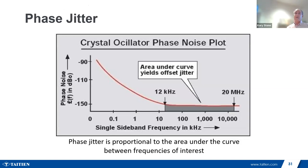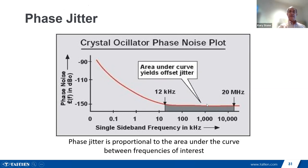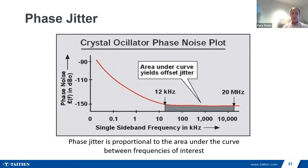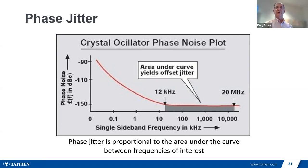Phase noise is used to calculate phase jitter. Rather than looking at the entire spectrum of noise an oscillator may produce, we look at it over a fairly narrow bandwidth — 12 kHz to 20 MHz. We're looking at the area underneath the phase noise curve within those frequency bounds — that's the phase jitter we're talking about. I have a slide later that covers how to calculate phase jitter from phase noise, and I can share that at the end of the presentation.